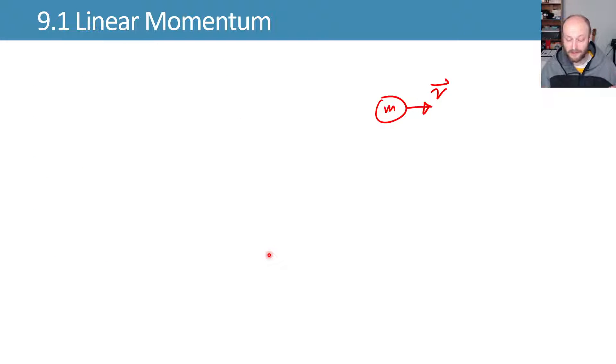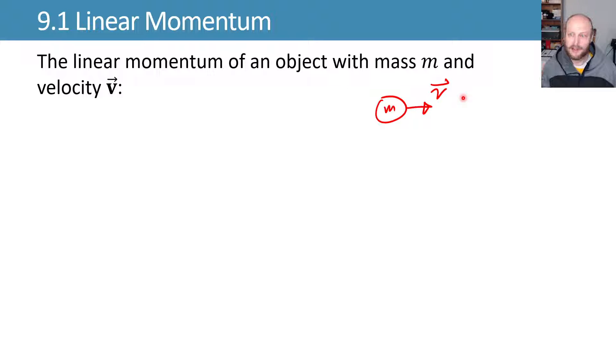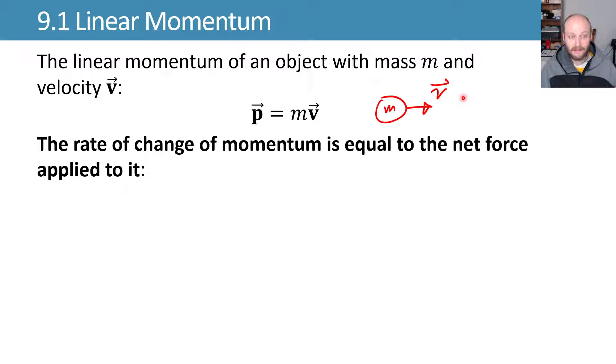First, linear momentum. If we have mass moving with some velocity, then it has a linear momentum that's equal to mass times velocity. The rate of change of our linear momentum is equal to the net force that's applied to it, which is Newton's second law.